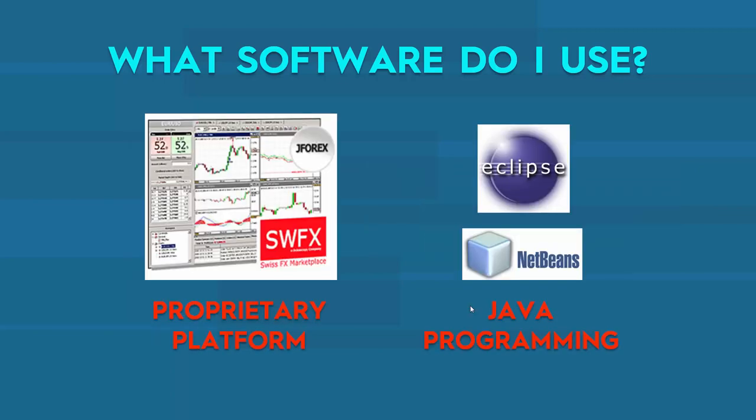Also, for very complicated algorithmic trading systems, I recommend Dukascopy — they have a few advantages over MetaTrader 4 for complex programming, and you can also use their API to attach Eclipse or NetBeans. But that's just a quick side note for coders.